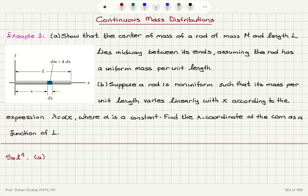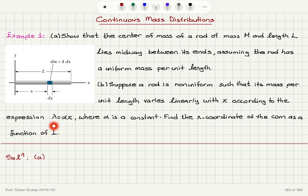We will continue by solving some examples for extended objects, that is to say we have a continuous mass distribution. Show that the center of mass of a rod of mass M and length L lies midway between its ends, assuming the rod has a uniform mass per unit length. Part B says: suppose a rod is non-uniform such that its mass per unit length varies linearly with x according to lambda equals alpha x, where alpha is a constant. Find the x-coordinate of the center of mass as a function of L.